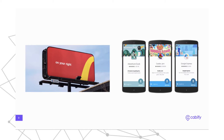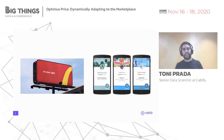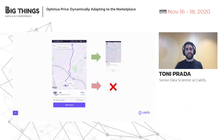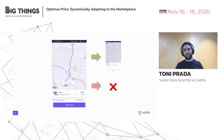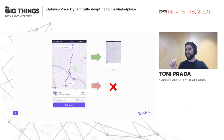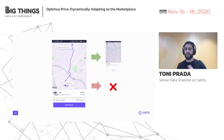Since we are also an online platform with the capability of offering tailored experiences, can we use these techniques to improve our pricing process? To refresh: we show a price to users, they can decide if they like it, the journey happens and we send the car to the pickup point — or if they don't like the price, they abandon the app and no money changes hands.